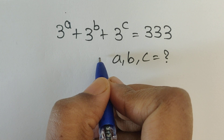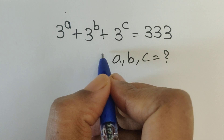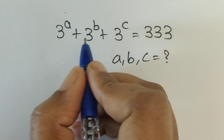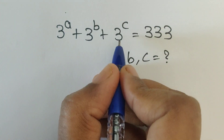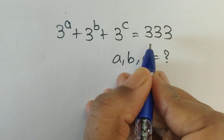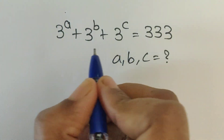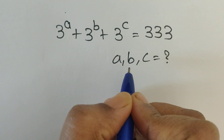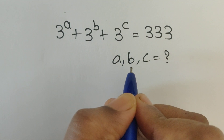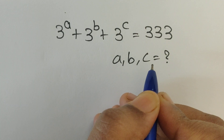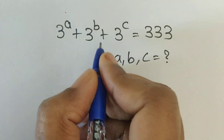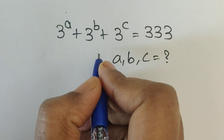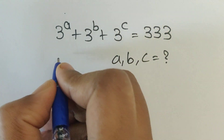Hello everyone, welcome back to our channel. Here we have one problem: 3 power a plus 3 power b plus 3 power c equal 3333. In this problem we have to find the values of a, b and c. So how do we solve this problem? Let's see.